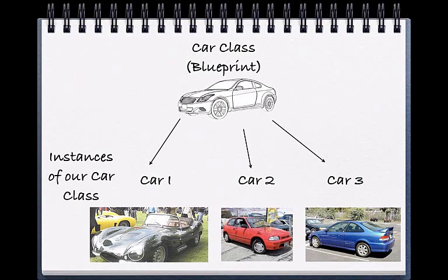In our car example, it could be color, model, brand, or any other set of attributes or properties you can think about that would be required to properly describe a car.